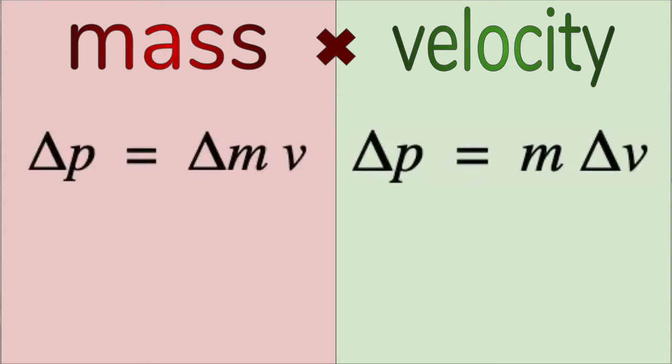So the change in momentum can be written in these two ways. Either change in mass times constant velocity, or constant mass times change in velocity.